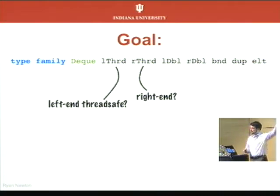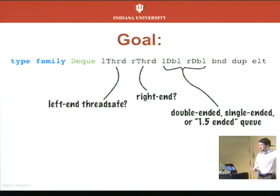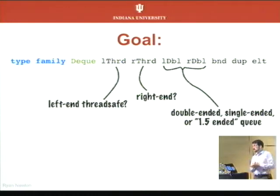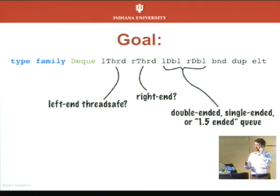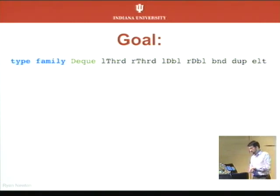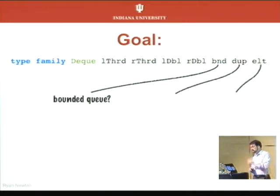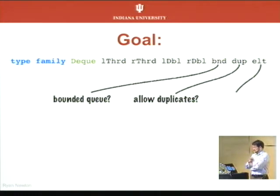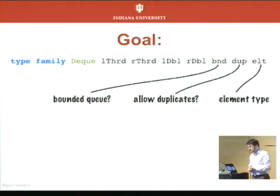We're plugging in phantom types to make these choices. We also want to know whether multiple threads are accessing one end of a queue, and whether that end supports both push and pop — that's the distinction between double-ended, single-ended, and 1.5-ended. We encode this by saying the left end is either doubly-capable or singly-capable, and likewise for the right end. Our last type parameters say whether the queue is bounded or grows unboundedly, and whether it allows duplicates — because in some concurrent data structures, like the work-stealer GHC uses, allowing low-probability duplicates lets you save a little synchronization. Finally there's the element type.